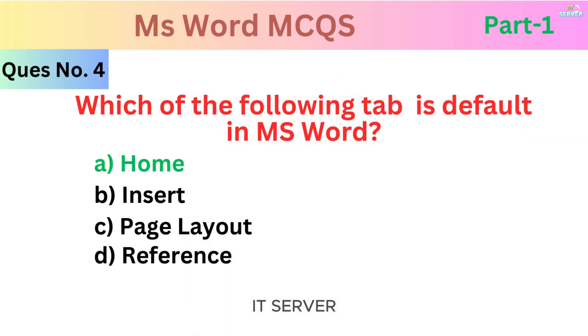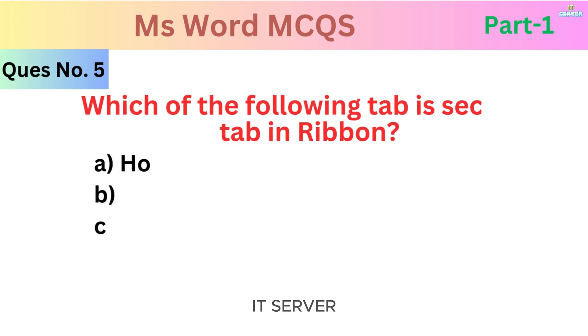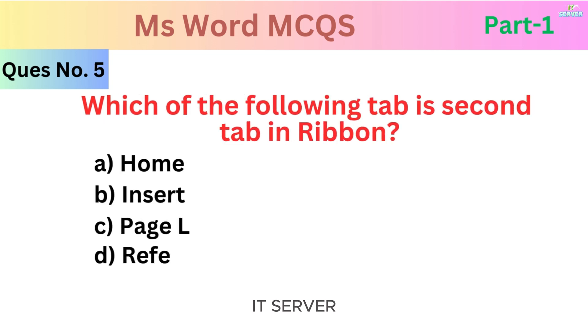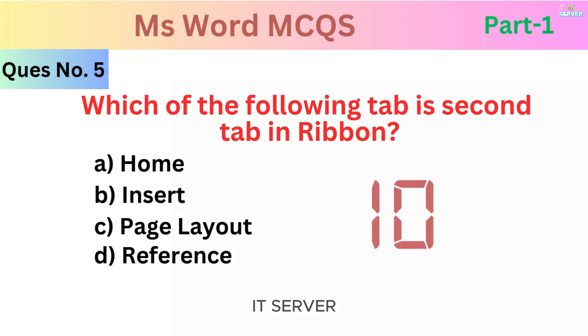How many tabs are there in Ribbon? Which of the following tab is the second tab in Ribbon? The answer is 8.